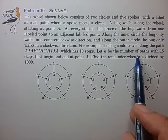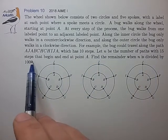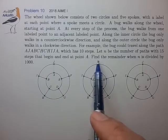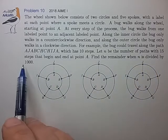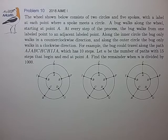Let n be the number of paths with 15 steps that begin and end at point A. Find the remainder when n is divided by 1,000. Okay, a very difficult counting problem it looks like.